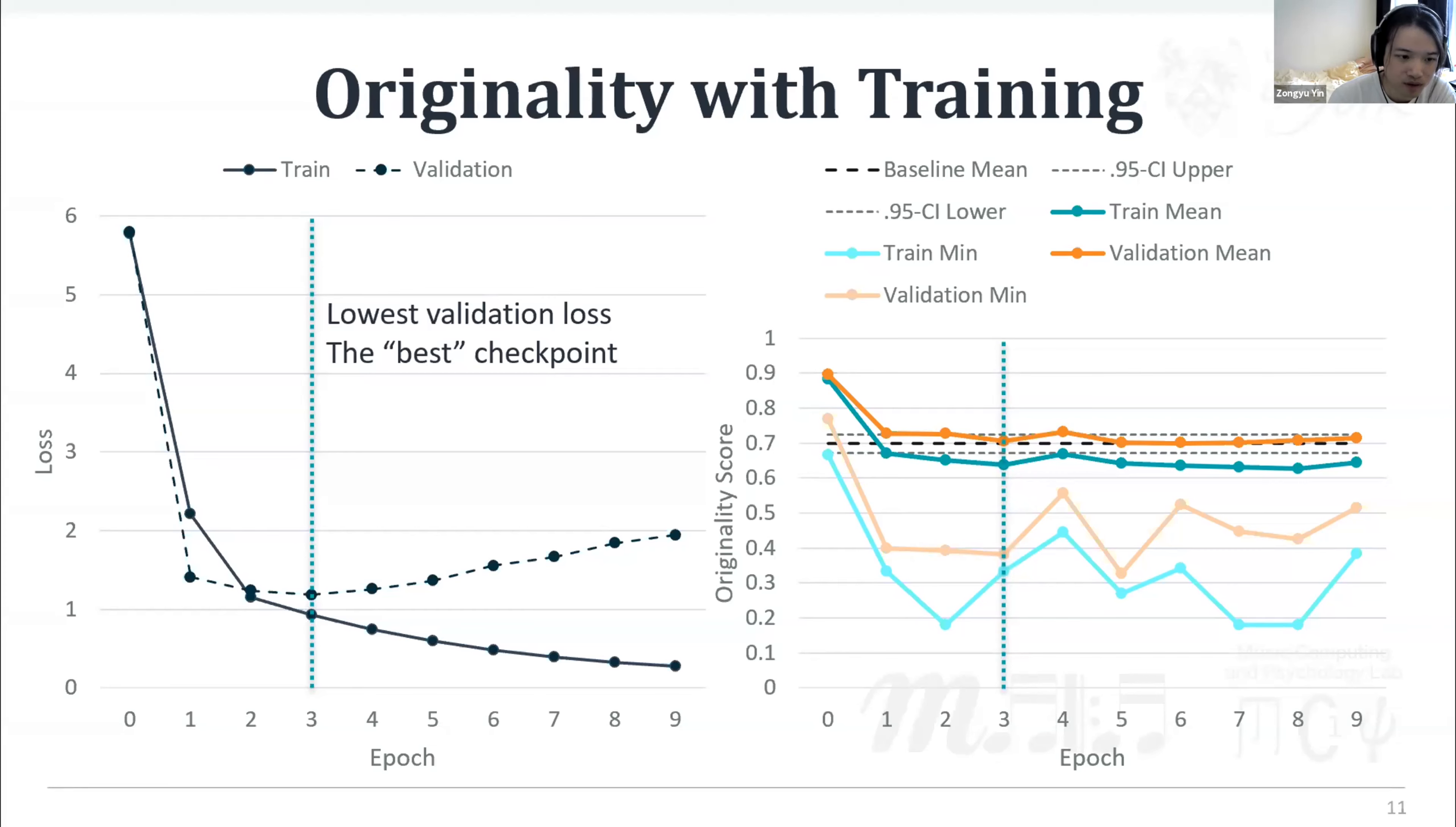Then looking at the right side, we use cyan and brown lines to denote the mean value of originality score against train and validation sets, and then use lighter color to represent the minimum value of originality score. Then the originality level starts going down since the beginning. For training sets, it drops out of baseline interval since epoch 1. And after epoch 3, it tends to remain in a certain level. But it does not necessarily mean the generated output are in the same quality across these later epochs. So we would like to assess the worst case examples next.